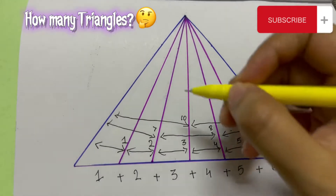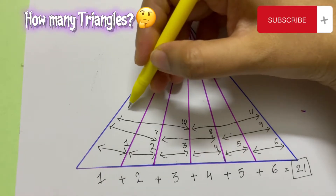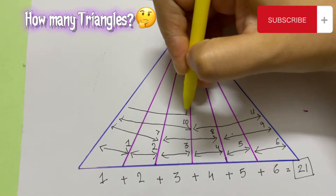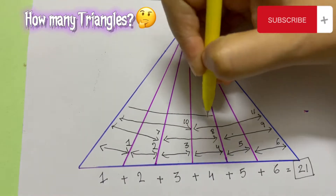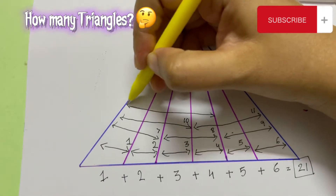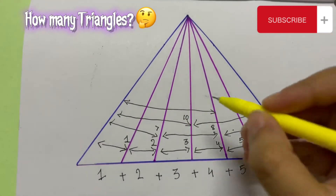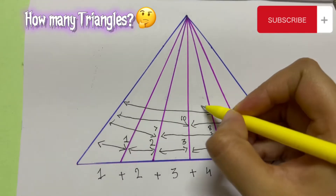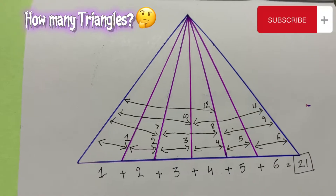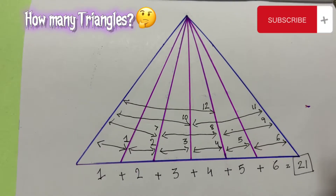Then I will just have four triangles together — one, two, three, and four, from here to here. That makes it the twelfth triangle.